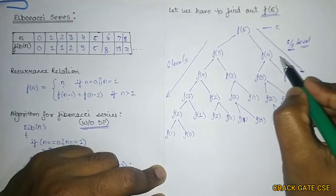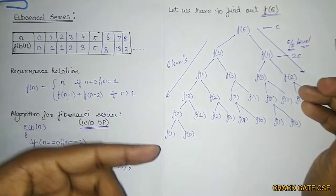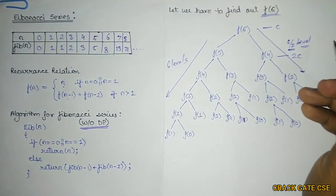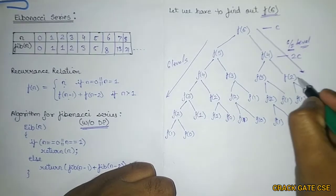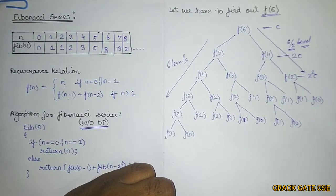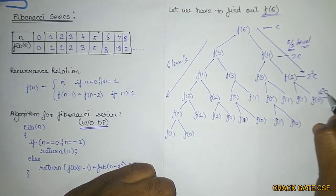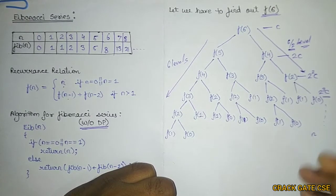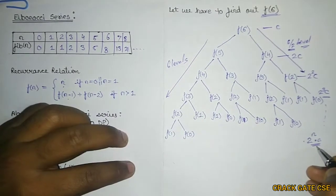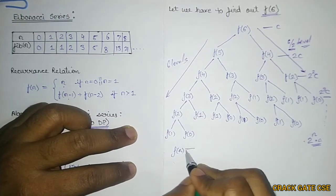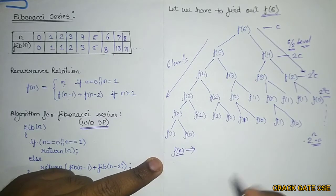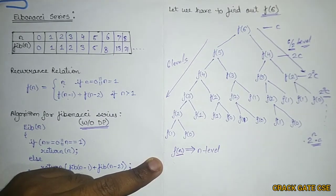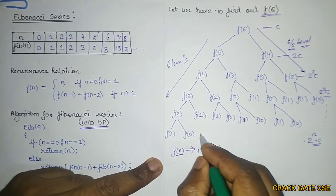Using the tree method to find time complexity: each node is divided into two children. So this gives us 2C at one level, 2² C at the next, then 2³ C, and so on. If there are n levels, we can write it as 2^n into C. So for n distinct levels the time complexity approaches 2^n.